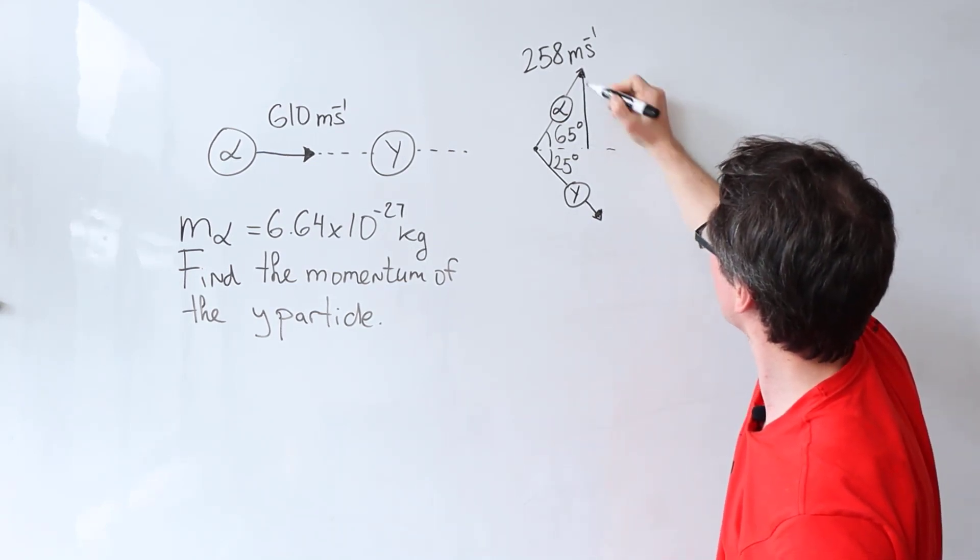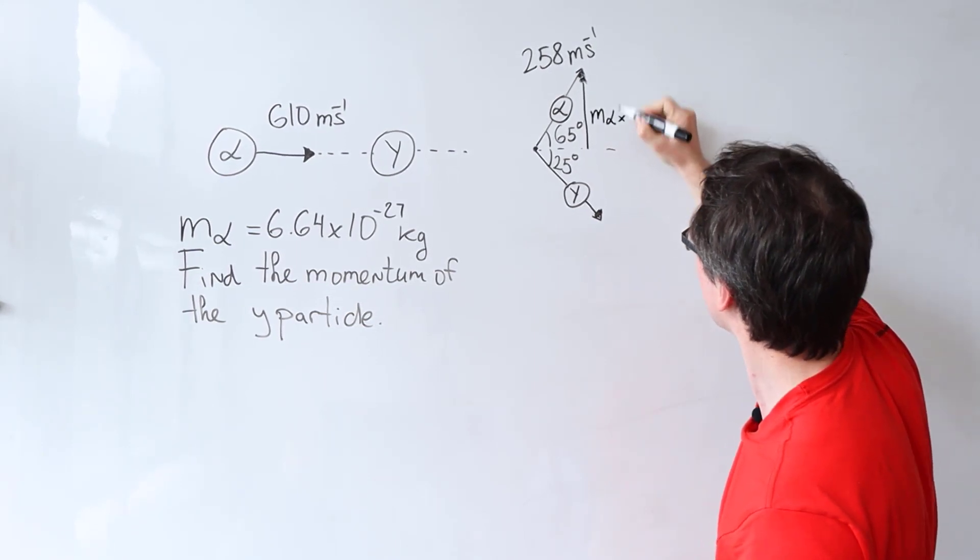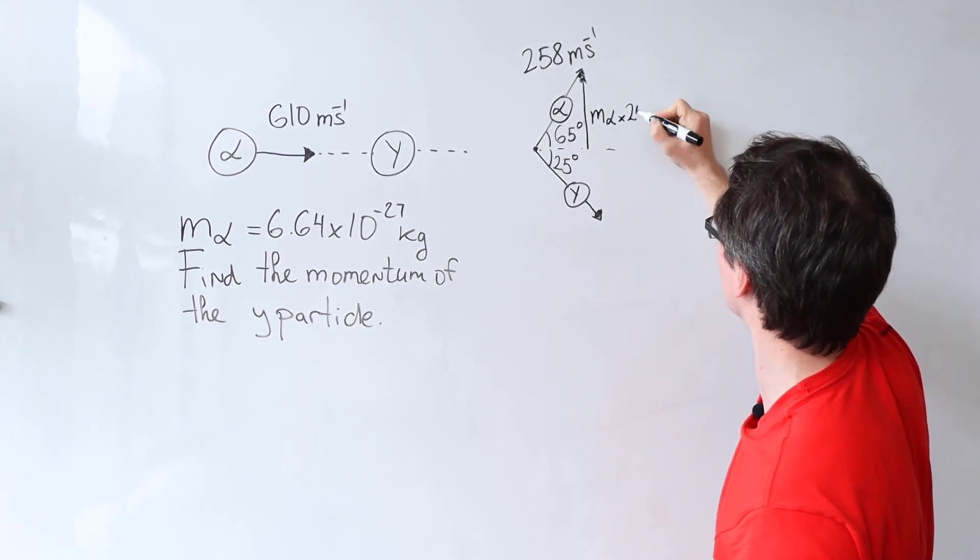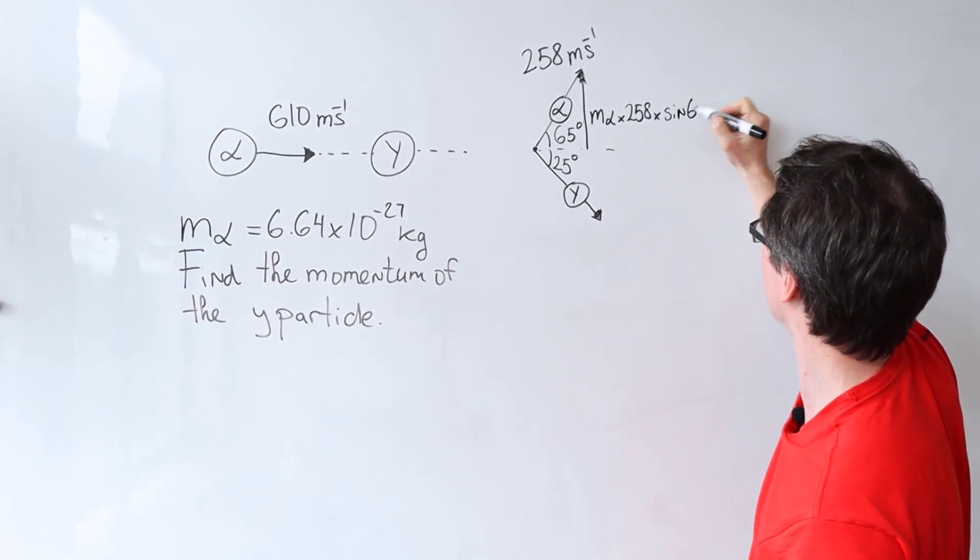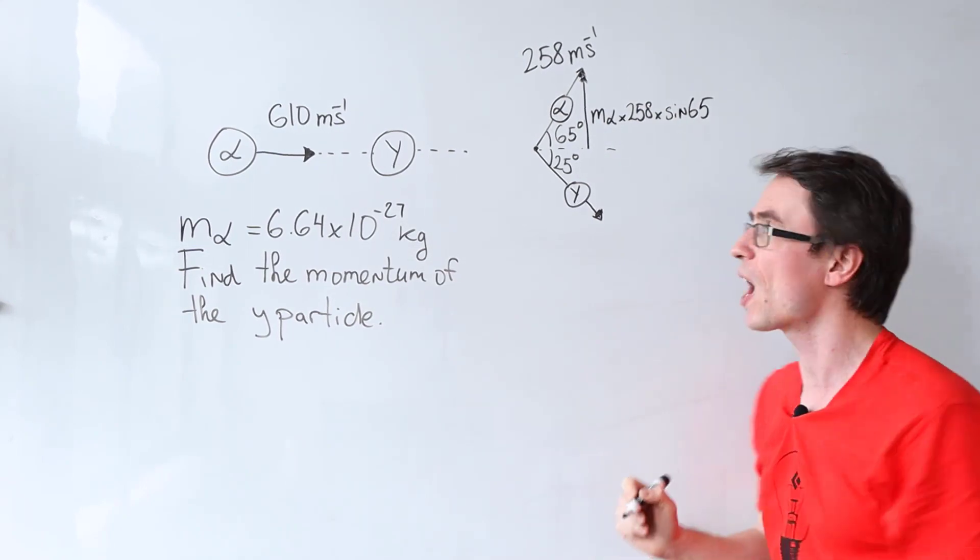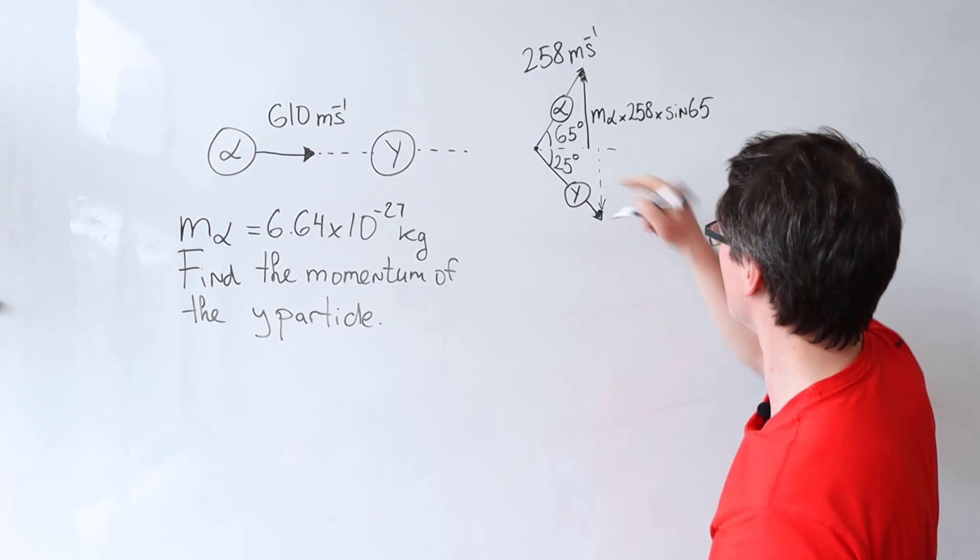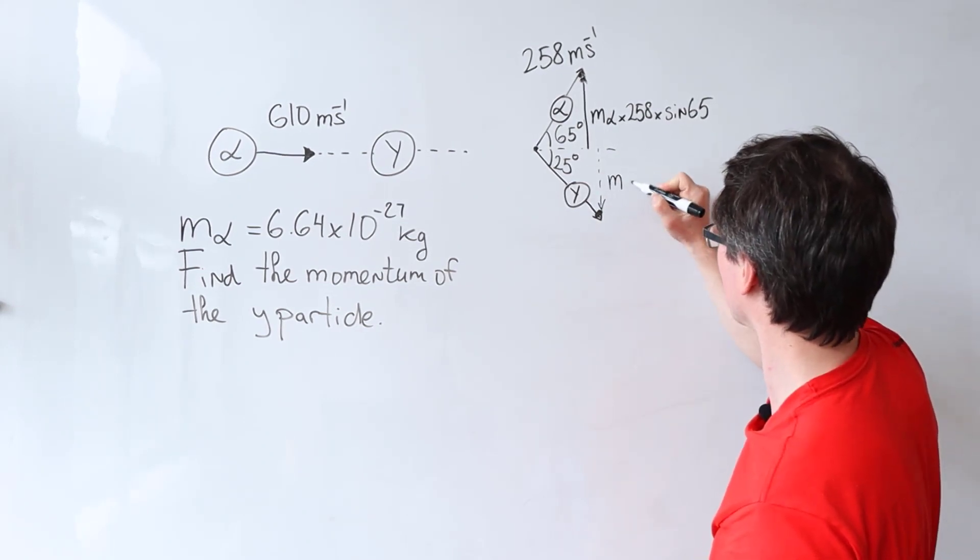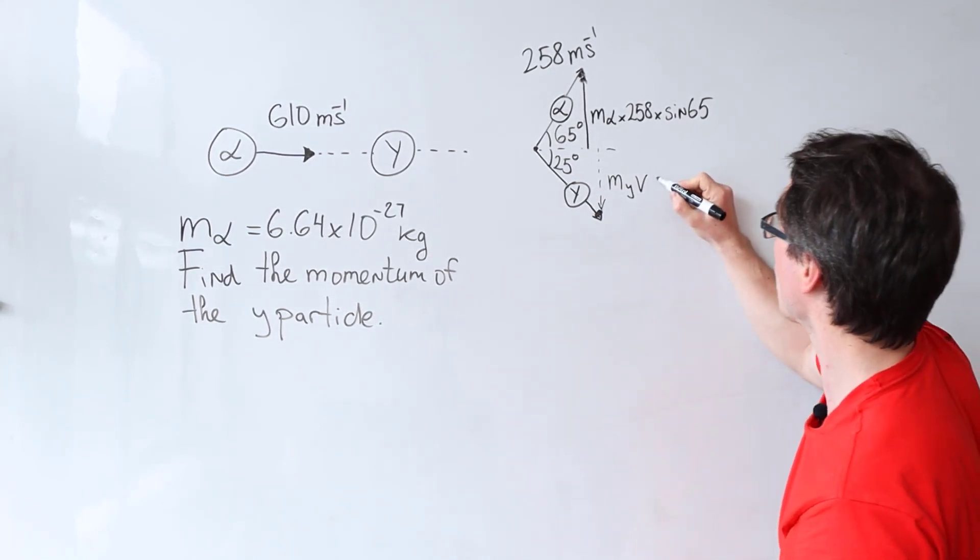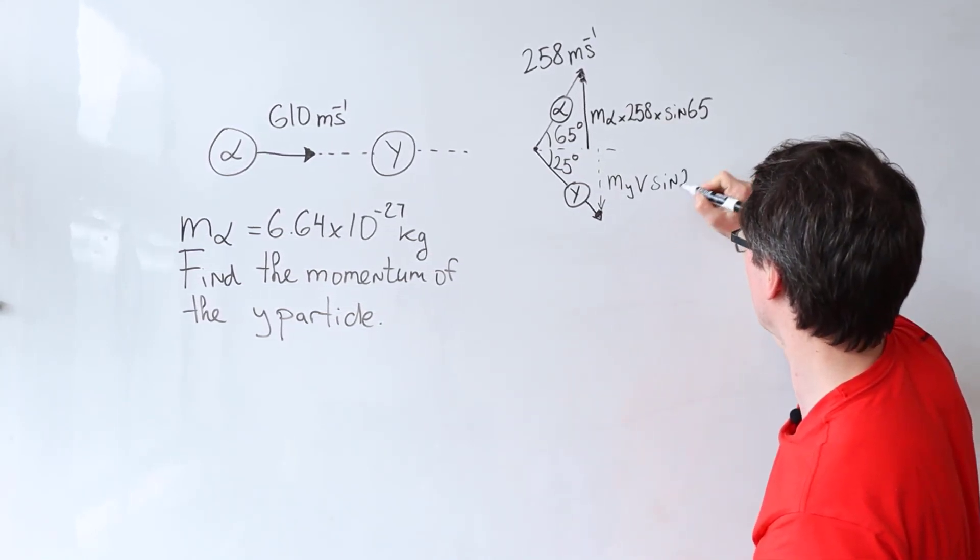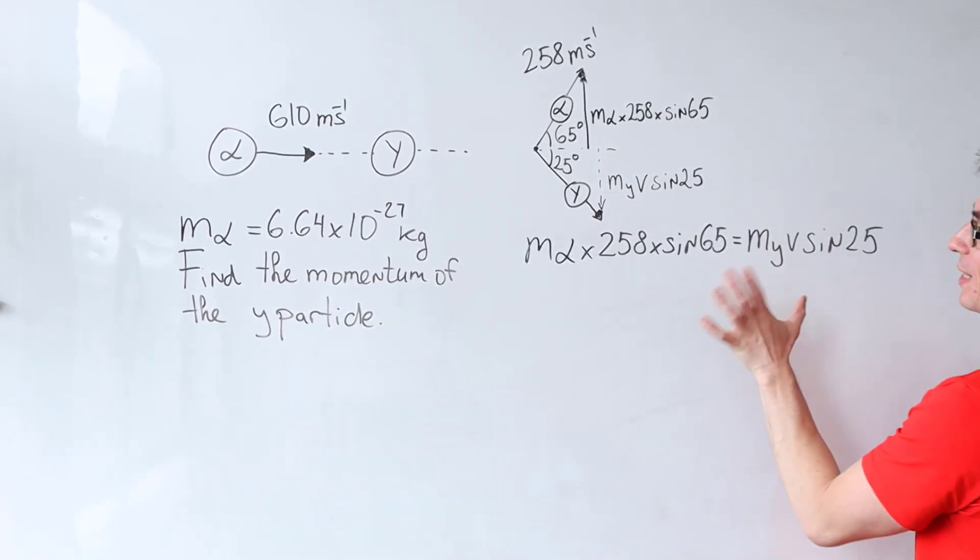So the y component will be a vector here and be given by the mass of the alpha particle times v, which in this case is 258 times the sine, because it's the opposite component, so sine of 65. The y momentum of this particle here will be given by its mass, let's call it my, multiplied by some speed that we don't know times sine of 25. And those two quantities are going to be equal and opposite.